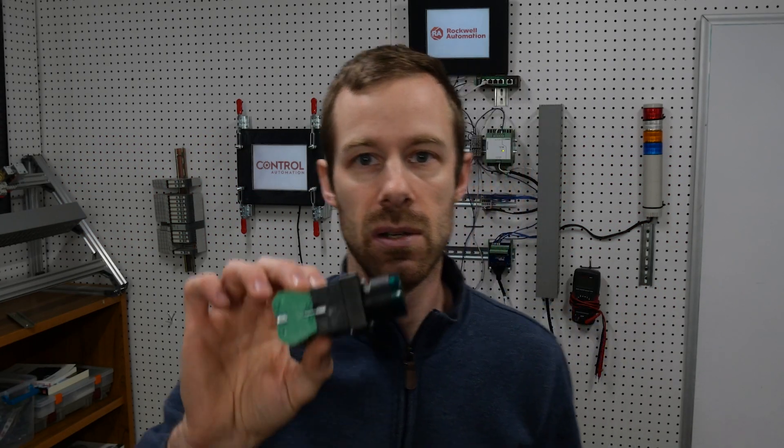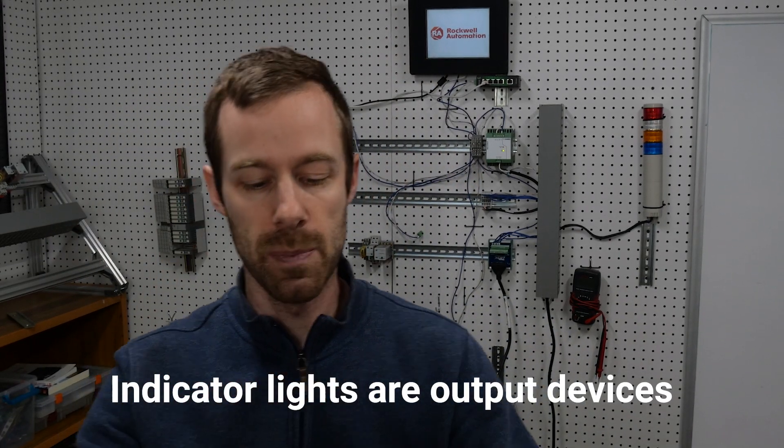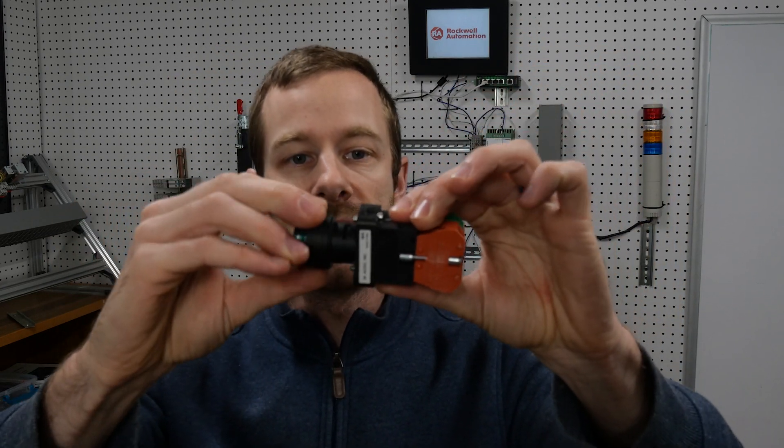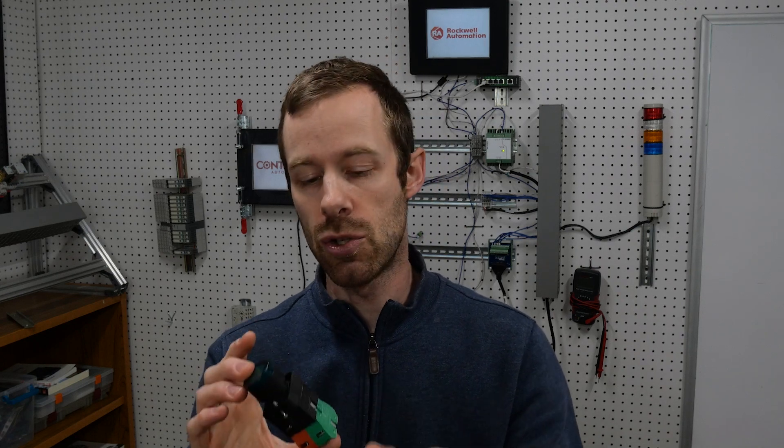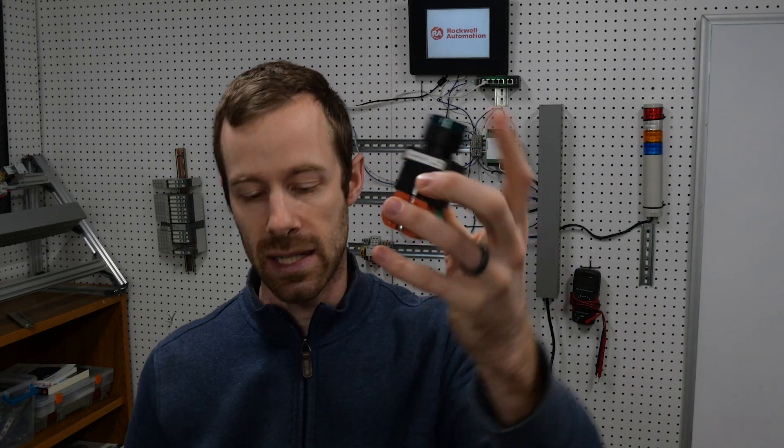A lot of times these push buttons, which buttons by themselves are an input, they'll have indicator lights or illuminated push buttons is often what they're called. Inside they have a light bulb, and that light bulb is a separate device from the push button. It doesn't always mean press the button and the light turns on. Often that's the case, but not always. We can control them separately. So the light is an output while the button contact is an input.